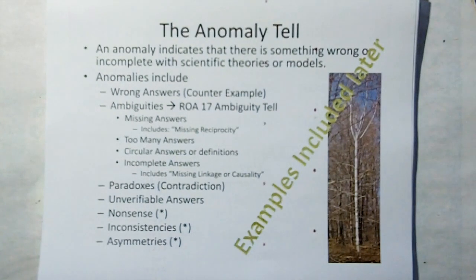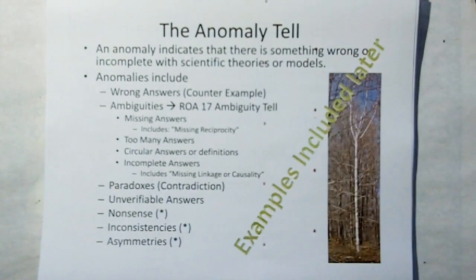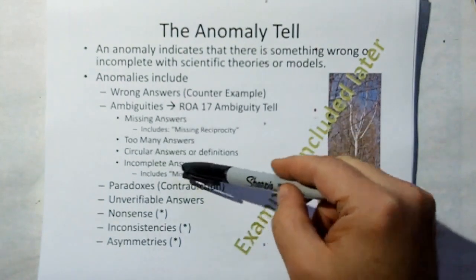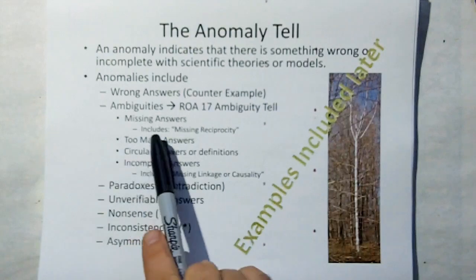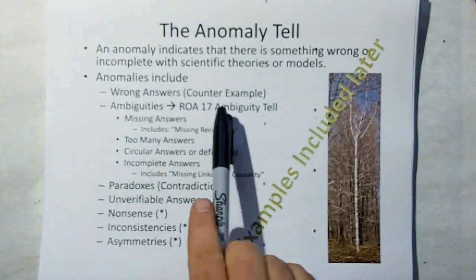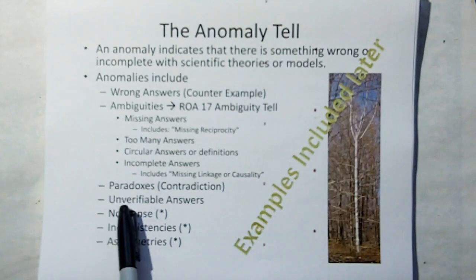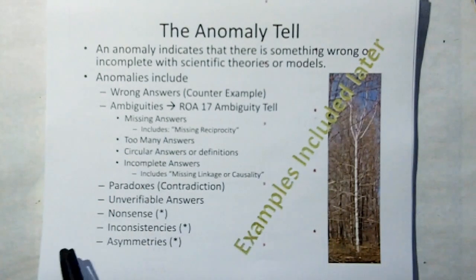Anomalies can include such things as wrong answers, which are also known as counter-examples, and ambiguities — we're not going to get into detailing all these, because ambiguities have spun off into their own Rule of Acquisition, Rule of Acquisition 17, the Ambiguity Tell. And then there's paradoxes, which are also contradictions.